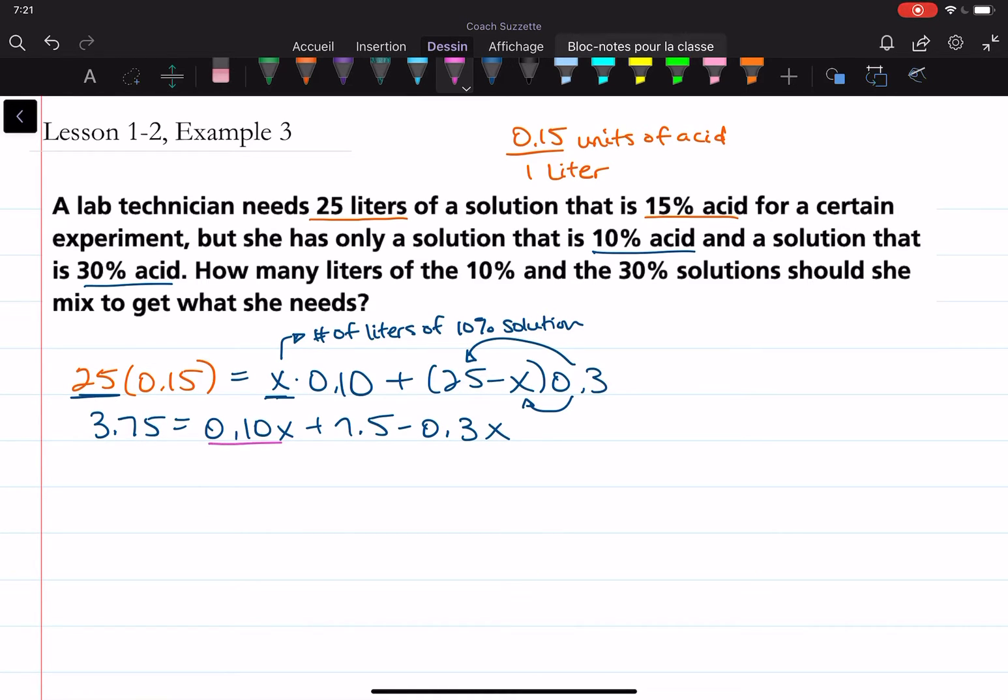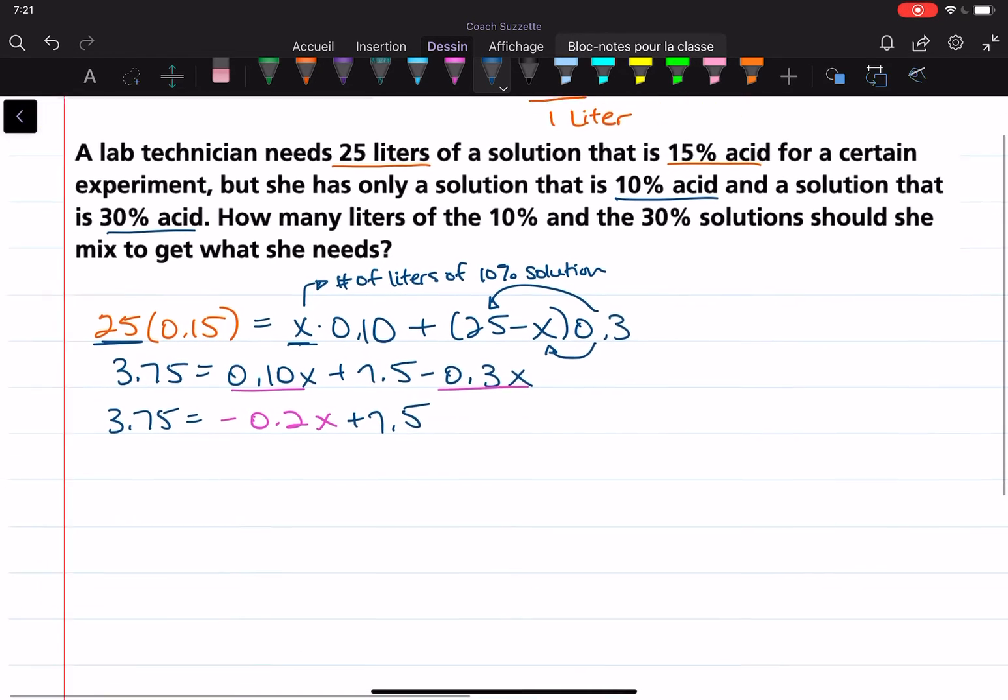Let's combine like terms. 0.1 minus 0.3 is equal to negative 0.2X. Then we still have our plus 7.5 here, and then equals 3.75 on this side.